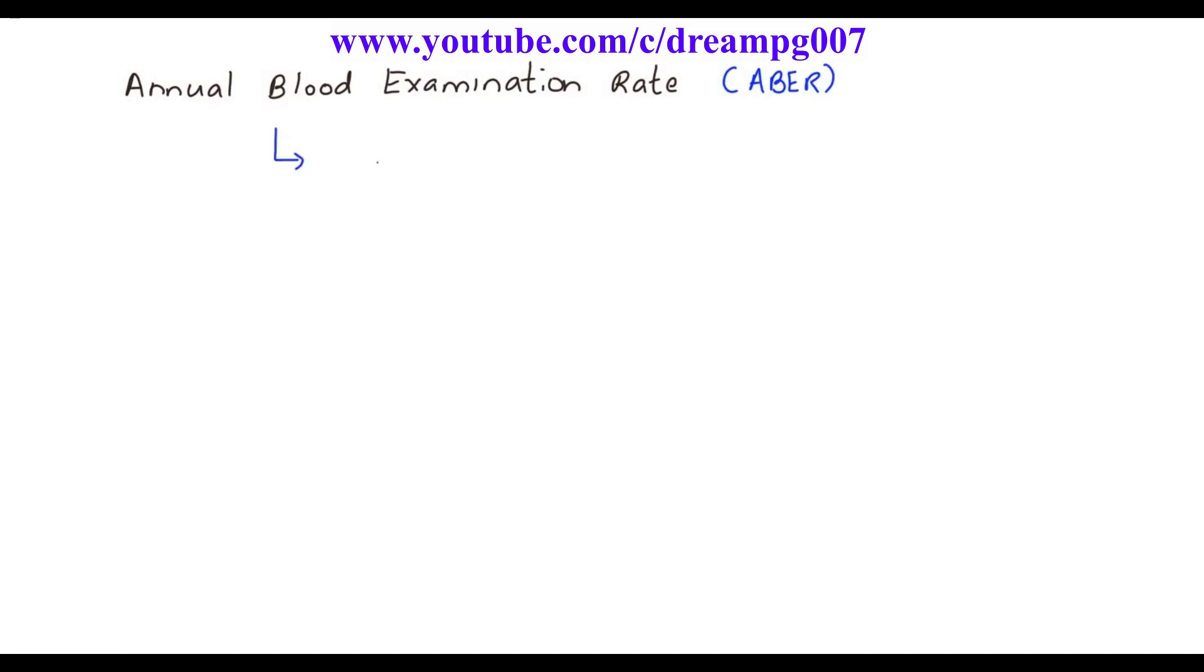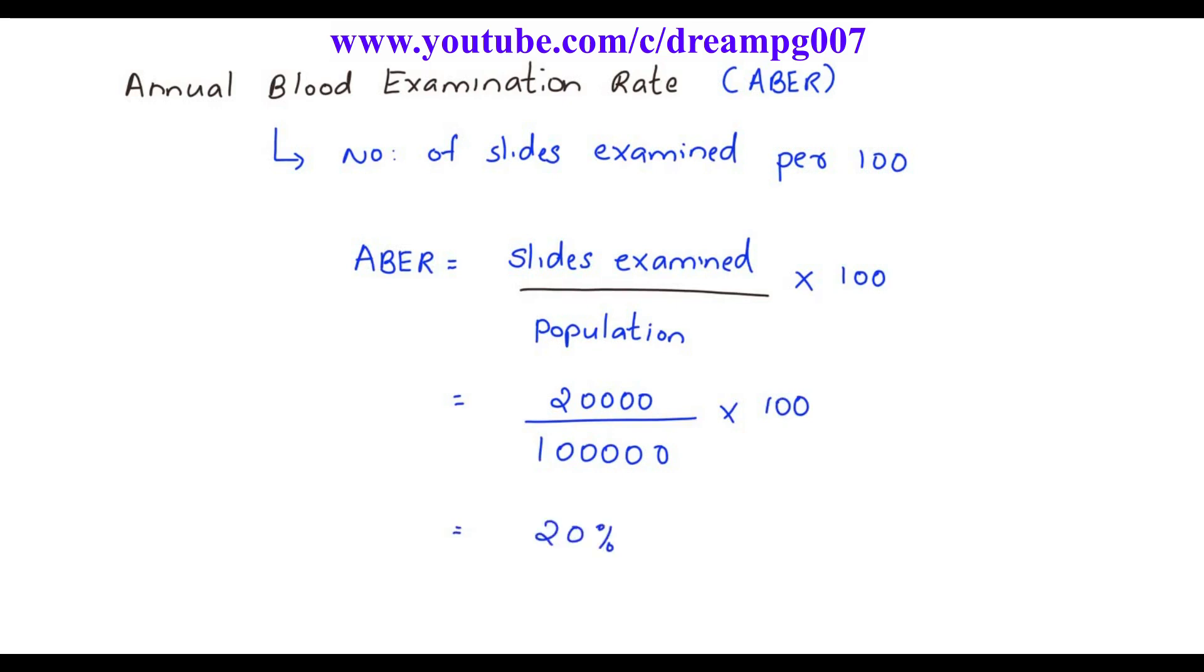Let's have a look into Annual Blood Examination Rate. It is the number of slides examined per hundred population. It's calculated by the formula: ABER equals slides examined divided by population into hundred. Annual Blood Examination Rate is an index of operational efficiency in a community. It should be at least ten percentage.